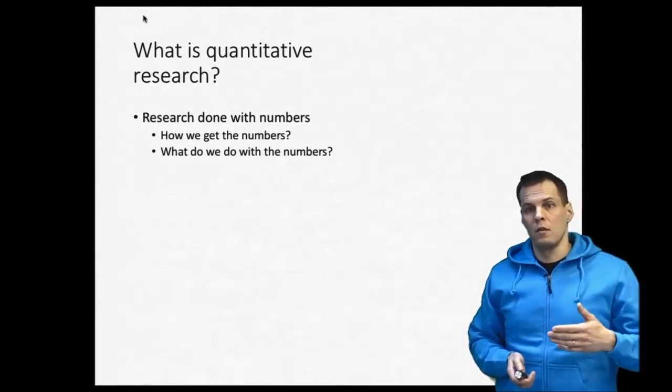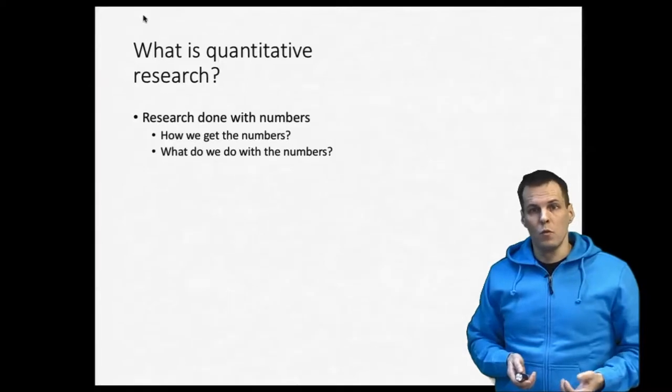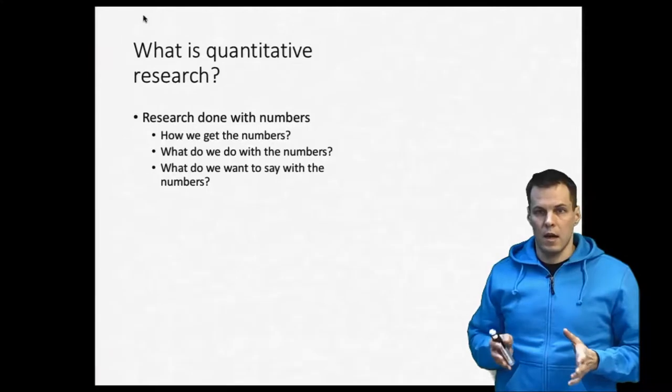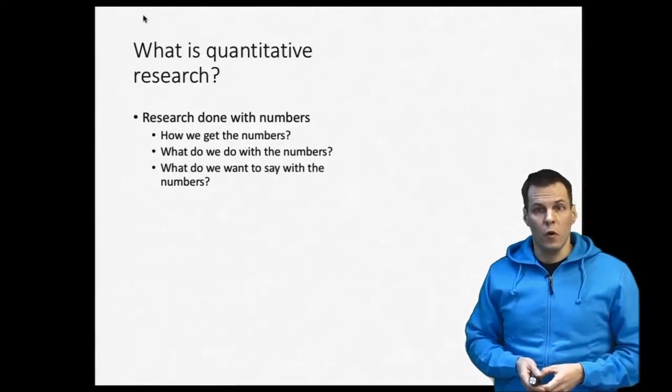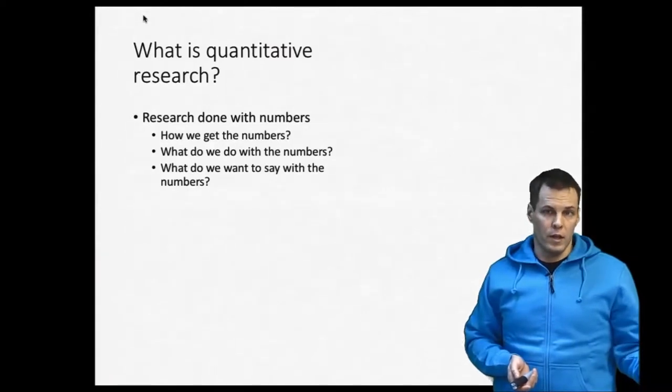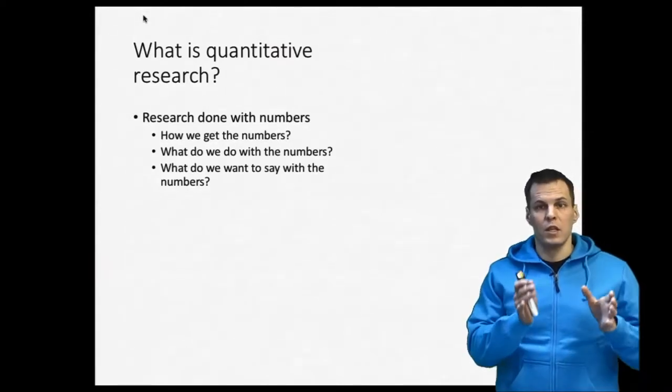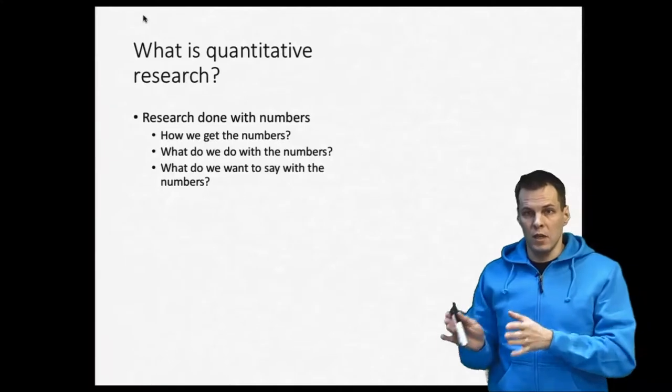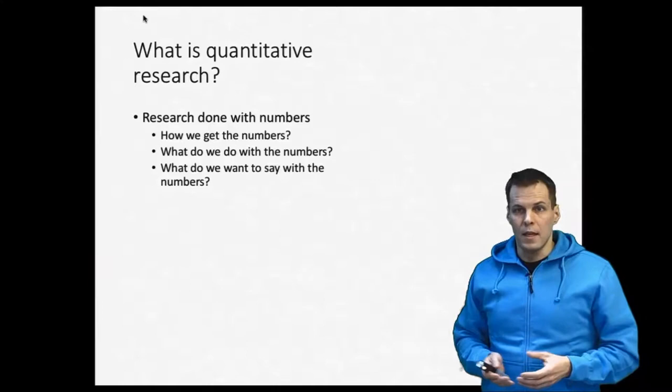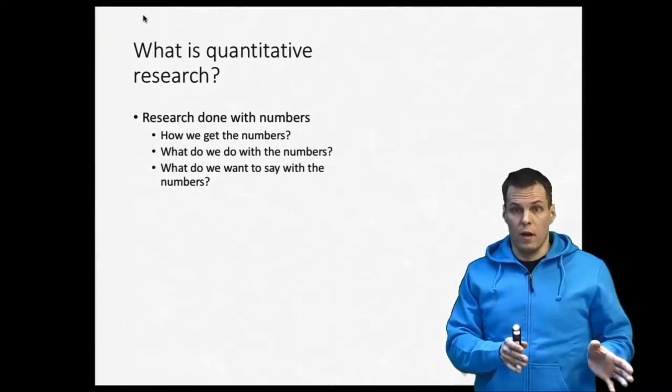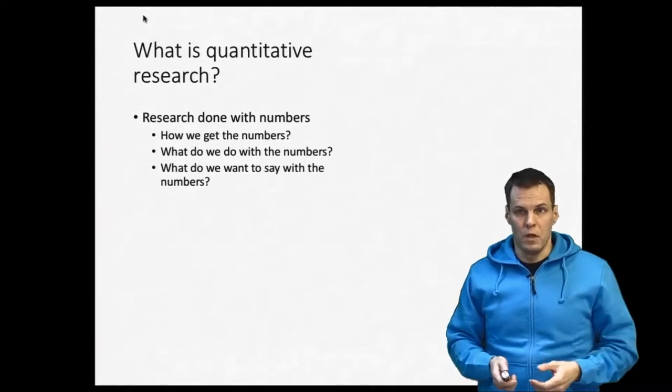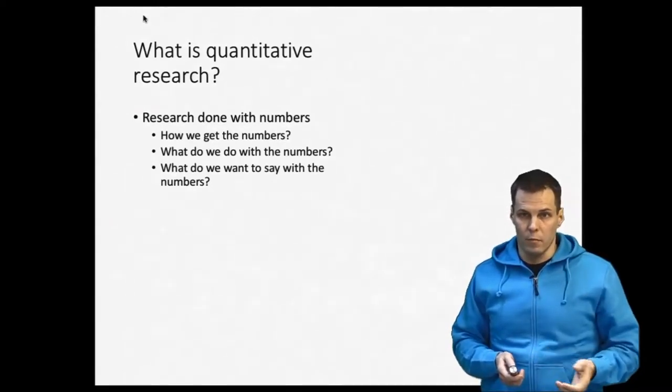And to understand what we can do with the numbers, we have to answer the third question: what do we want to say with the numbers? So typically our analysis has some kind of objective. We could be trying to answer a research question about, for example, the relationship between companies' profitability and the CEO gender, or we could be trying to predict something. For example, given some characteristics of a house, how much are we going to have to pay for the house? So statistical analysis can be used for multiple different purposes.